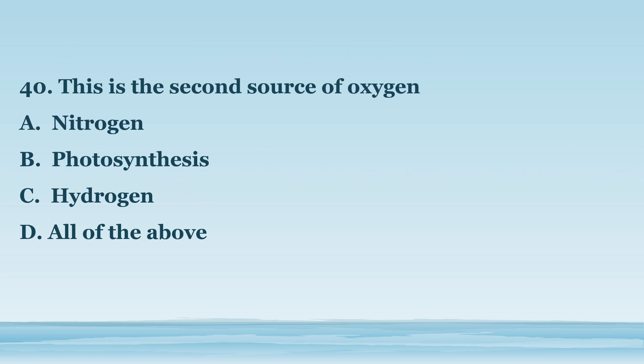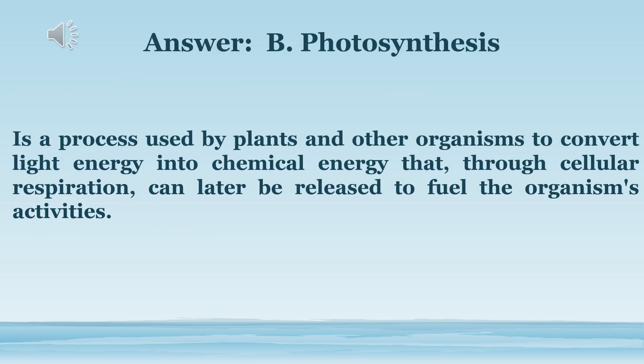Number 40. This is the second source of oxygen. A. Nitrogen. B. Photosynthesis. C. Hydrogen. D. All of the above. The answer is letter B. Photosynthesis. Is a process used by plants and other organisms to convert light energy into chemical energy that, through cellular respiration, can later be released to fuel the organism's activities.